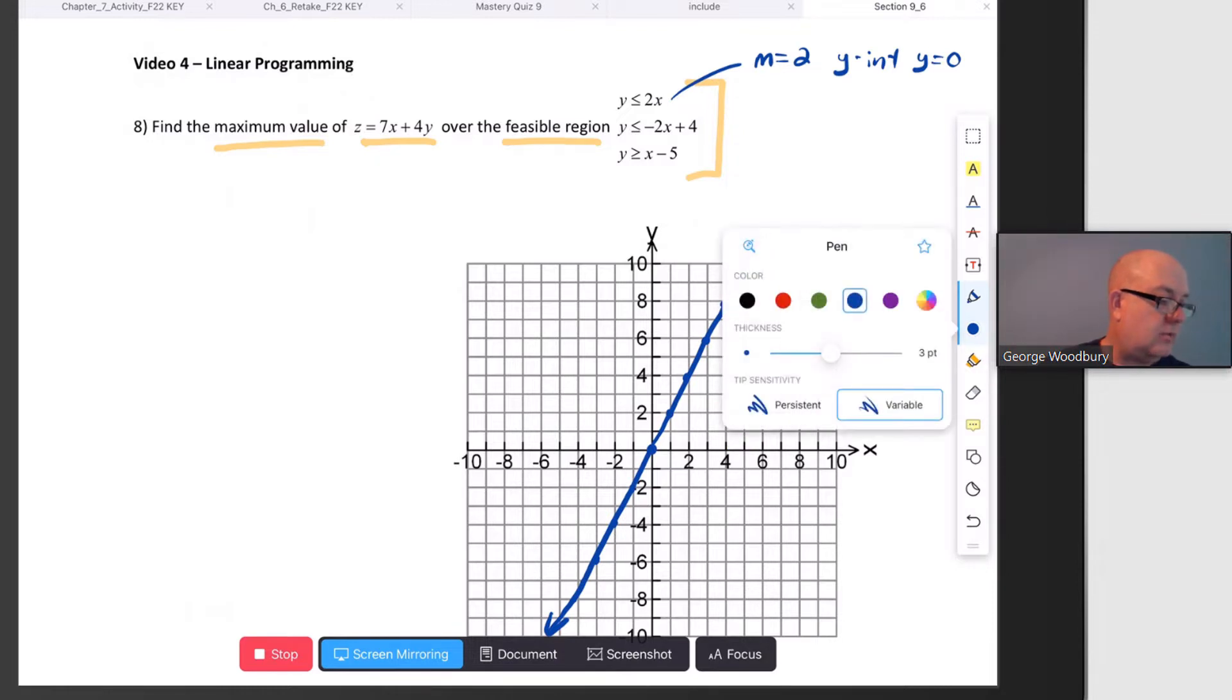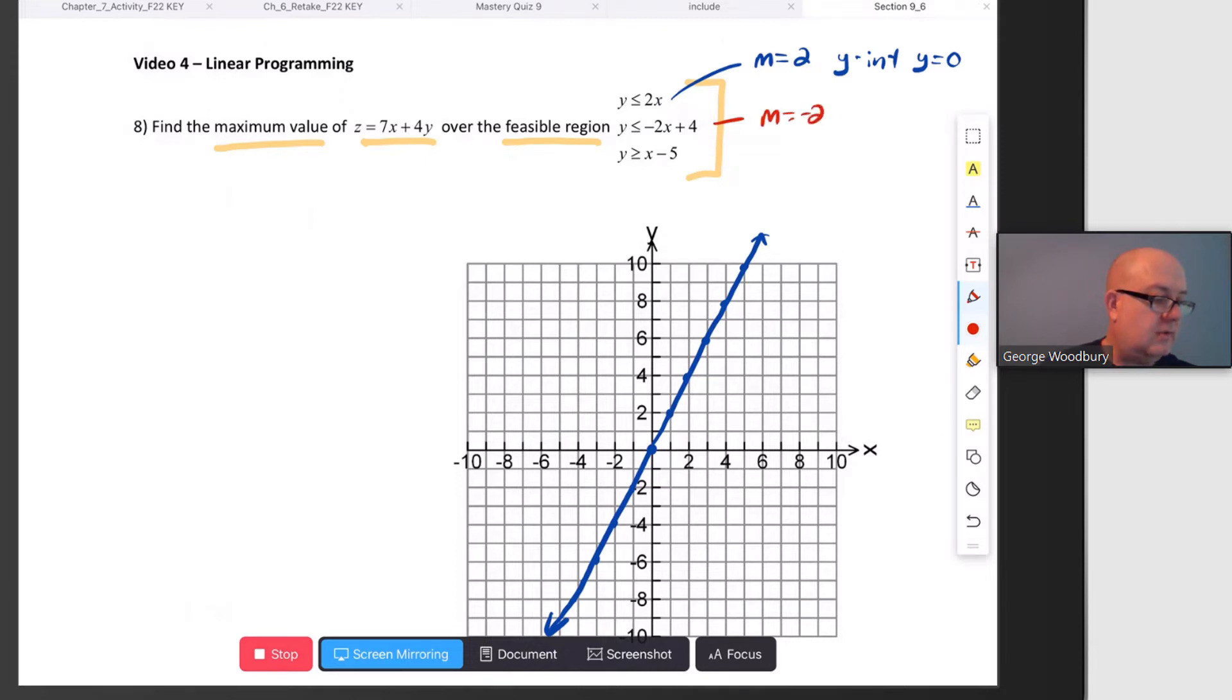Let's try the next one in red. This time, the slope is negative 2, so down 2, 1 to the right, and the y-intercept is going to be at y = 4. Start at 4, down 2, over 1, down 2, over 1, like that.